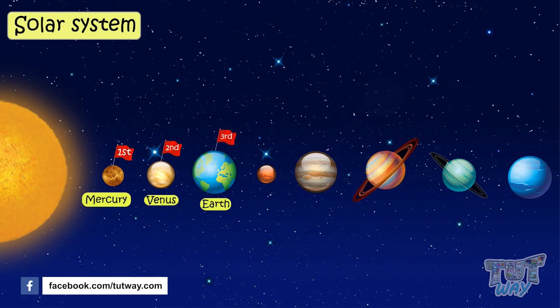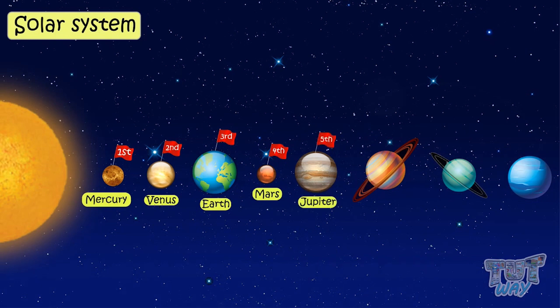Then comes Mars. Then Jupiter. Then Saturn. Then Uranus. And Neptune, which is farthest from the sun.